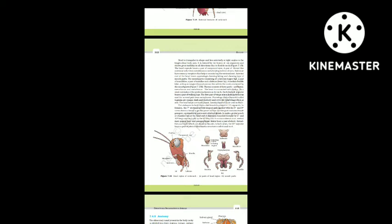The mesothoracic wings (tegmina) are opaque, dark and leathery and cover the hind wings when at rest. The hind wings are transparent and membranous and are used in flight. The abdomen in both males and females consists of ten segments. In females, the 7th sternum is boat-shaped and together with the 8th and 9th sterna forms a brood/genital pouch whose anterior part contains the female gonopore, spermathecal pores and collateral glands. In males, the genital pouch lies at the hind end of the abdomen. Males bear a pair of short thread-like anal styles which are absent in females. In both sexes, the 10th segment bears a pair of jointed filamentous structures called anal cerci.